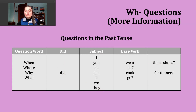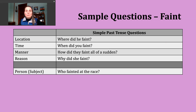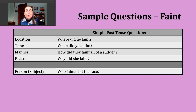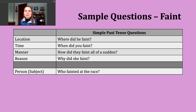Now that we've reviewed our structure, let's make some questions in the simple past tense with our verb of the day, and review the meaning of some of these question words as we go. Sometimes when asking for information, we want to know a place or location — for that, we use the question word where, W-H-E-R-E. An example might be: where did he faint? Perhaps someone is telling us about something bad that happened to another individual, and you want to know where that person was when this medical event occurred.